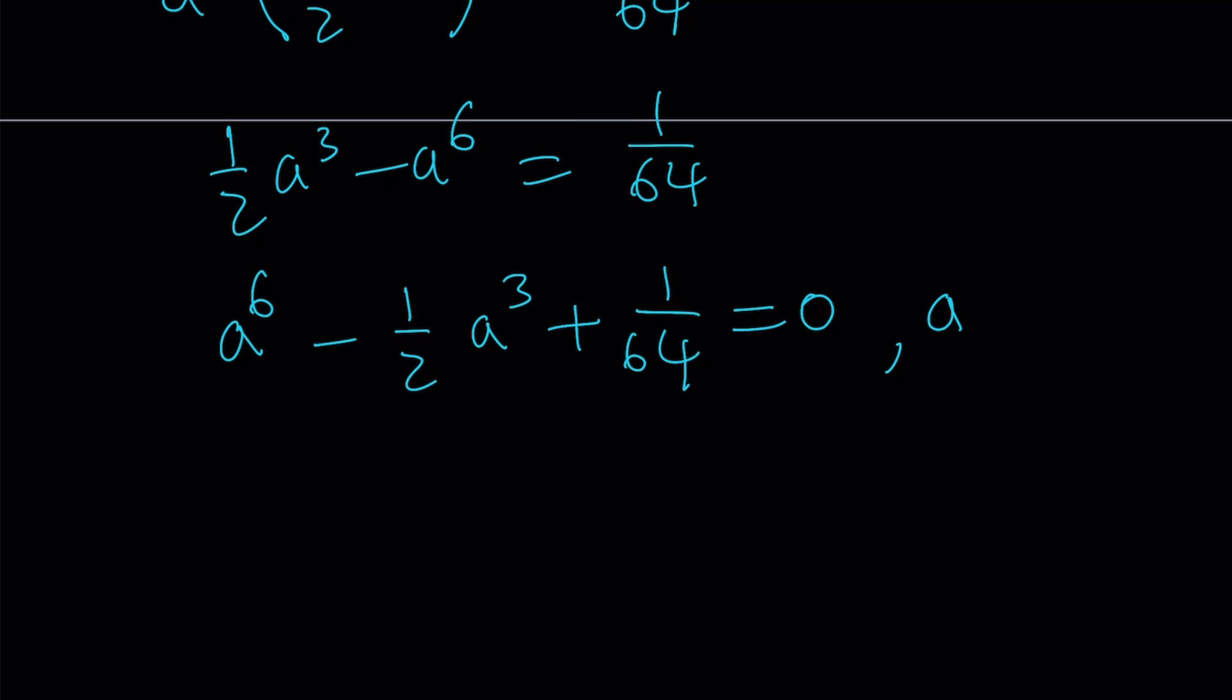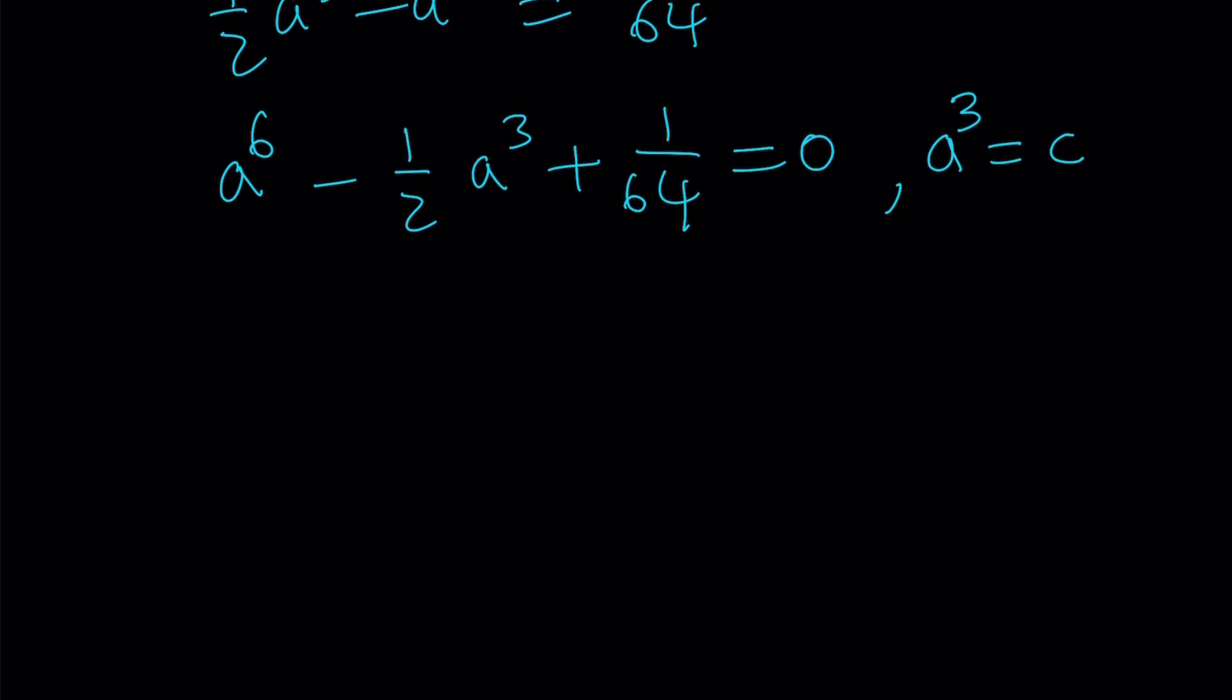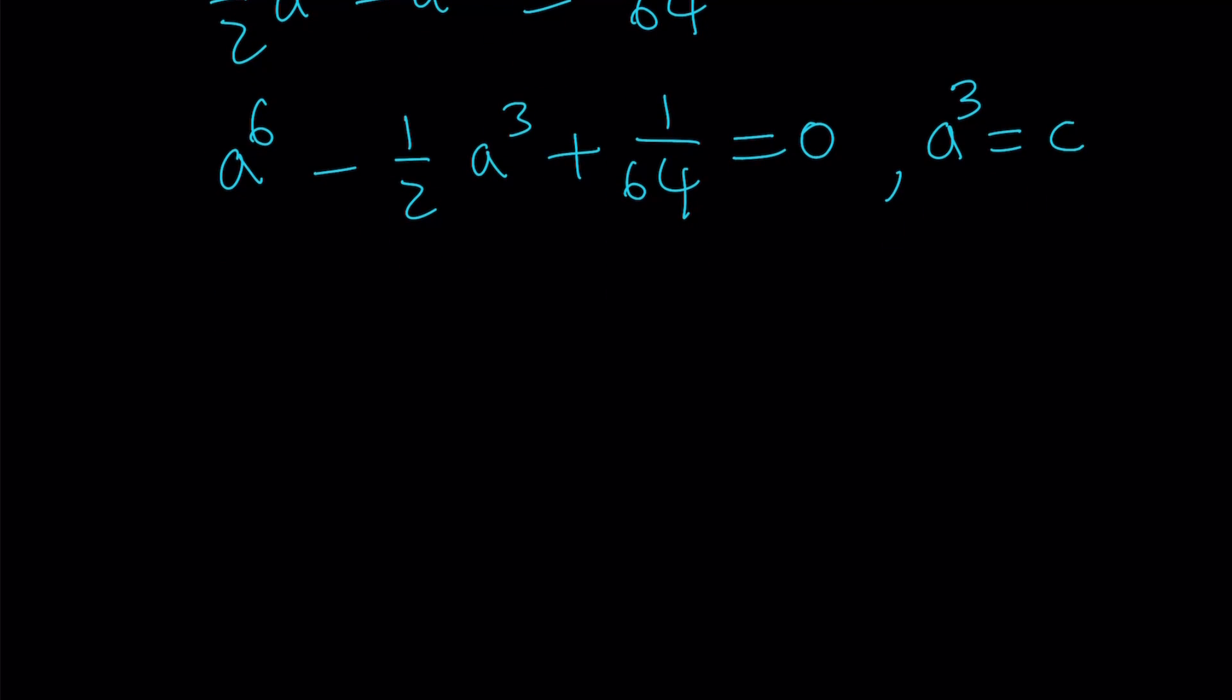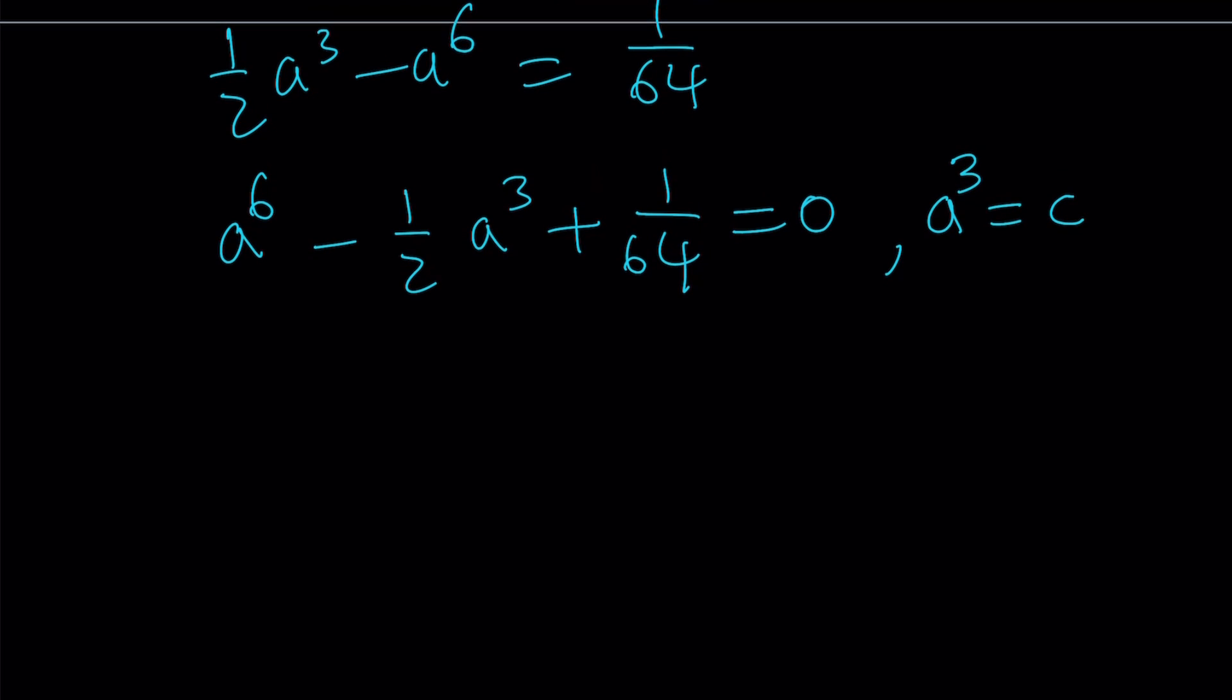So this is our quadratic, to be quadratic equation, if we call a cubed something. Since I have b in my system, I want to call a cubed c. Okay, c is not a constant. It's a variable in this case, right? Or whatever. So in this case, we get c squared minus 1 half c plus 1 over 64 equals 0. And this is the quadratic I was talking about.